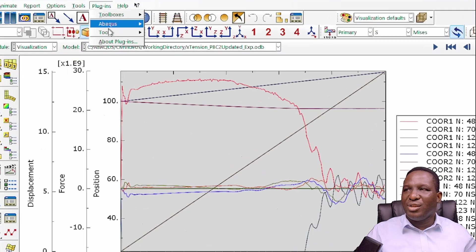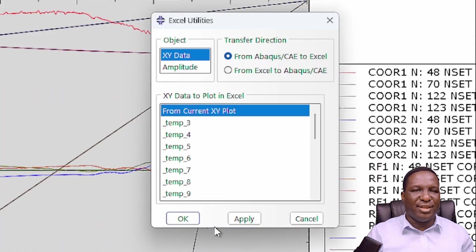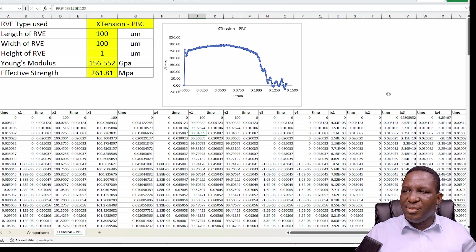You go to plugins, tools, Excel utilities—I'm looking for this current plot. Press OK. What will happen in the end is that it will create an assembly of all the values you have in the model.